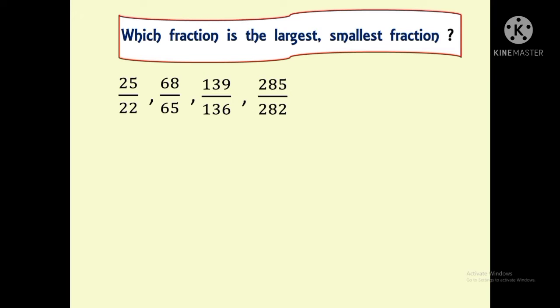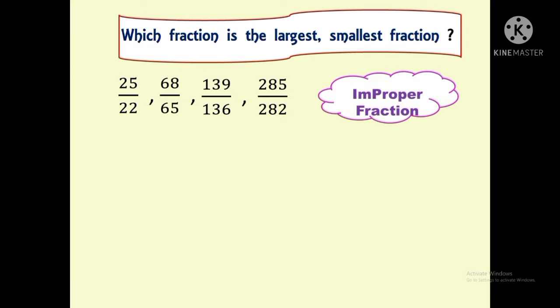First, we have to confirm whether the given fractions are improper fractions — that is, we have to find whether the numerator is greater than the denominator, because if the numerator is greater than the denominator, the fraction is improper. In this problem, in every fraction the numerator is greater than the denominator, so all the fractions are improper. Before applying the trick, we have to find the difference between the numerator and the denominator — that is, how much the numerator is greater than the denominator.